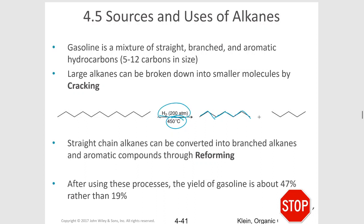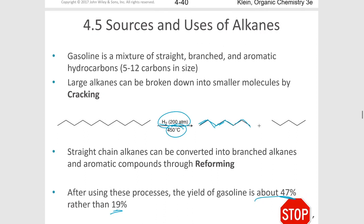These molecules are cracked — heated at a high temperature in the absence of oxygen, sometimes with hydrogen present to add to the ends — and that breaks them into smaller molecules that can be more useful, like for gasoline. With this process, the yield of gasoline is about 47% per barrel rather than 19%, which is just some information about the sources and uses for different alkanes.